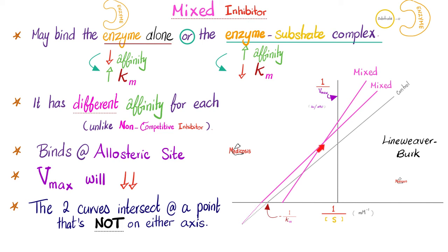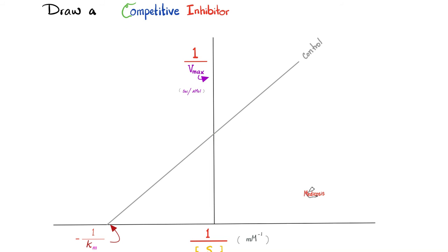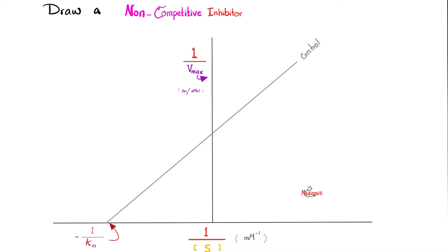For a mixed inhibitor: the line intersects the control at a point that is neither on the x-axis nor the y-axis — it's 'hanging in outer space.' For an uncompetitive inhibitor: the line is parallel to the control and does not intersect it. Practice: draw a competitive inhibitor — it does not alter Vmax but increases Km — connect those two points and that line represents a competitive inhibitor like statins.